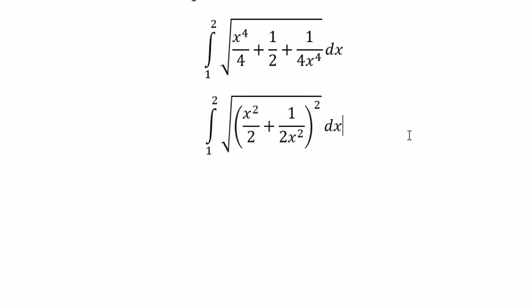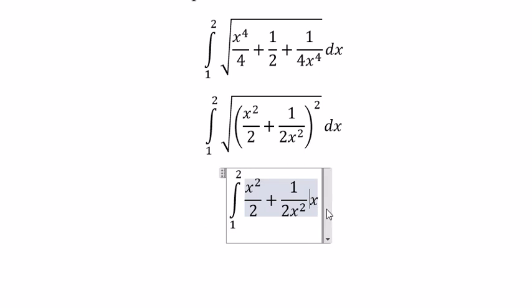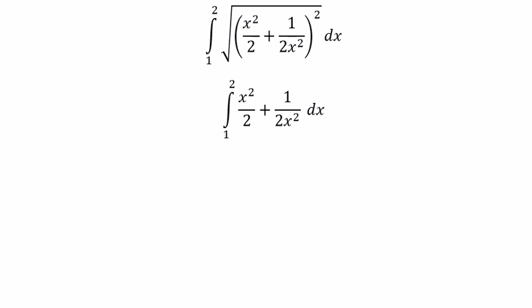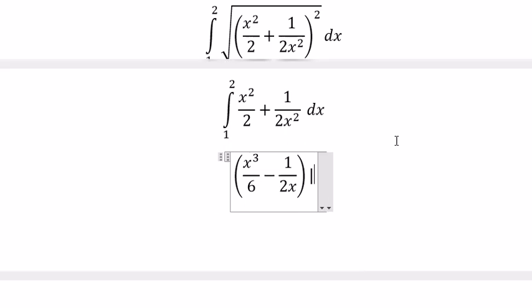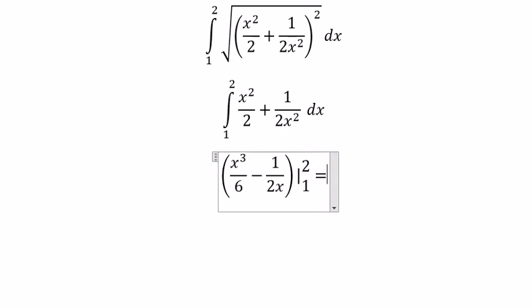So we simplify this. And we get this one left. And now we get the final answer. And we put the boundaries in here. And we get the final answer: 17 over 12.